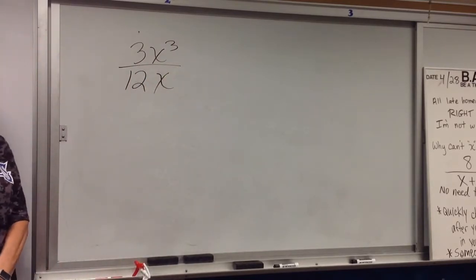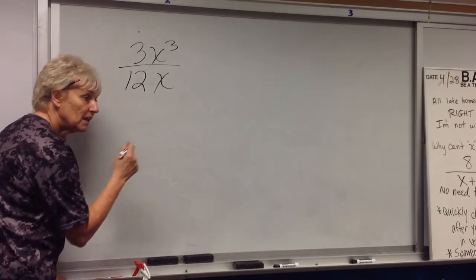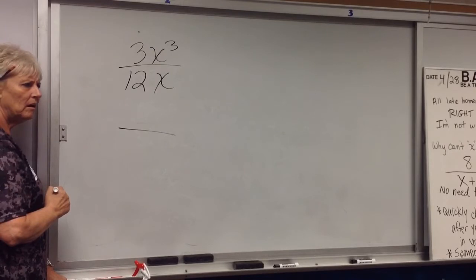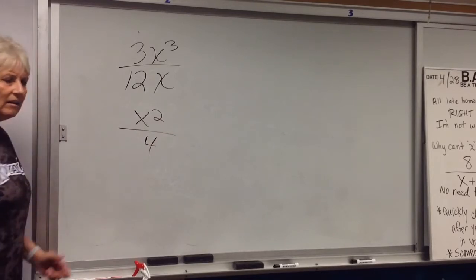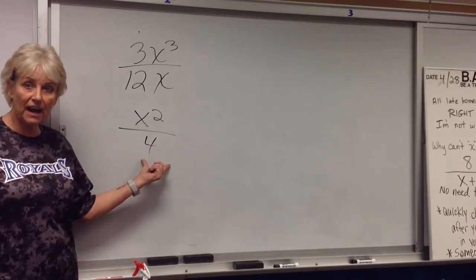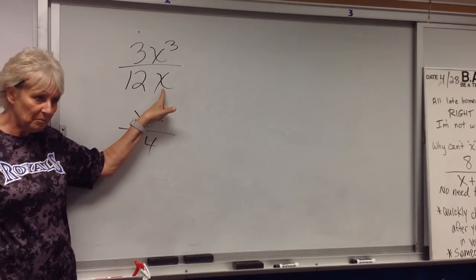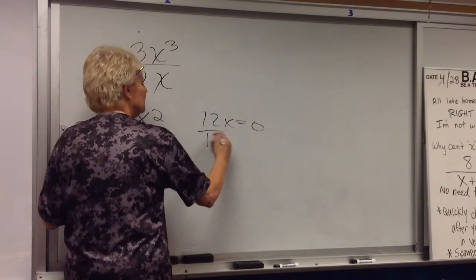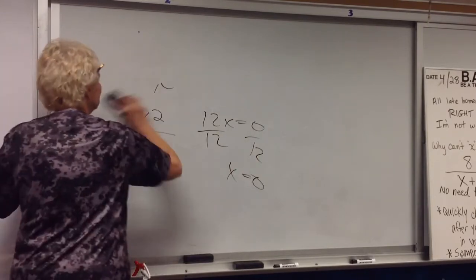3x cubed over 12x. What do I do? Can you reduce this? x squared over 4. x squared over 4. x is 0.